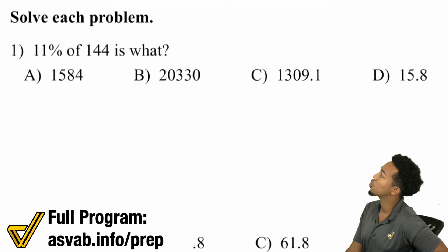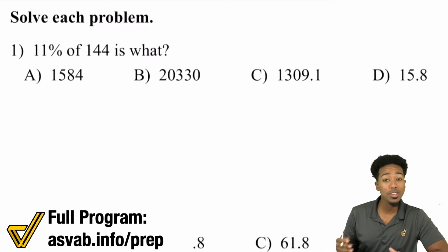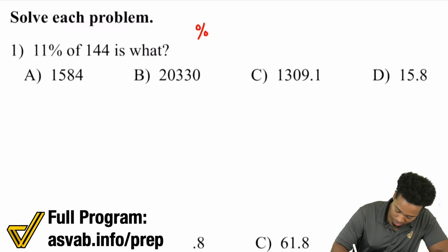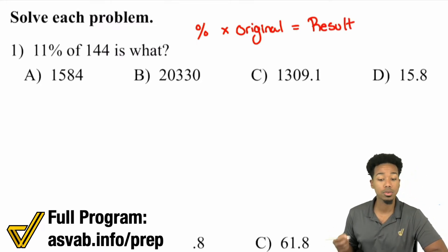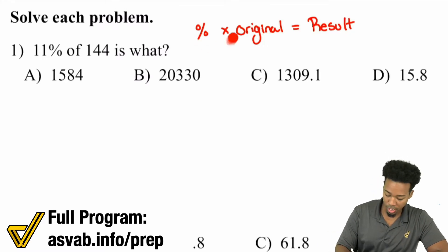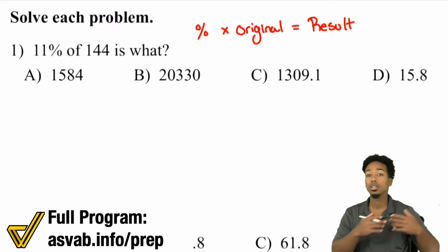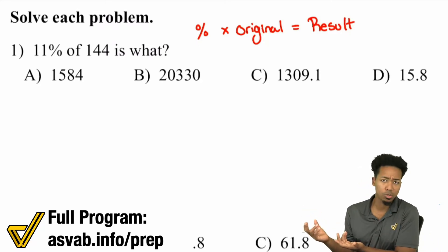Here we're asking for 11% of 144. The key formula is: percent times the original number equals the result. So if you see '11% of 144 equals what,' that tells you you're looking for the result. In this video all we're going to be doing is multiplying because we're finding the result. In future videos this formula will be very important for working backwards.